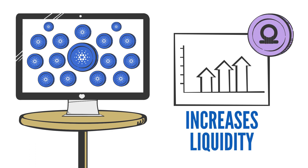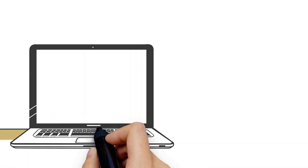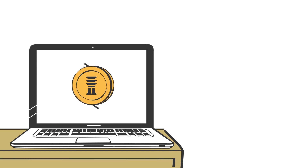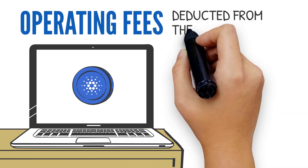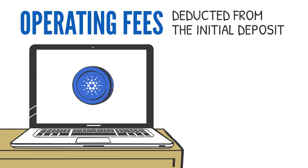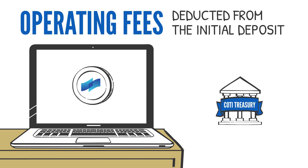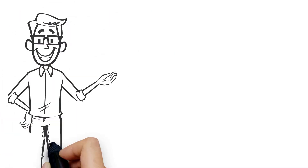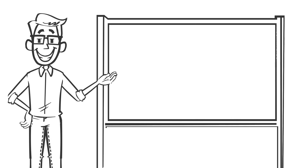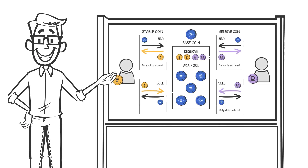In addition, as the pool grows from people transacting, the reserve also grows, which increases liquidity and the price of the reserve coin. Every transaction will also be subject to operating fees that will be paid in ADA and deducted from the initial deposit. These operating fees will be converted into Cody and streamlined into the Cody Treasury to be distributed as rewards to its users. I hope this video gives you a better understanding of the JED stablecoin and how it will factor into Cody's ecosystem.